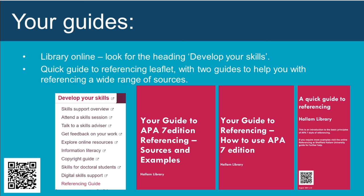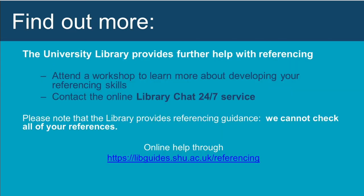'Your Guide to APA 7 Edition Referencing and How to Use APA' covers the main principles of referencing and citing. If you have questions about secondary referencing or citing multiple authors, take a look at this guide. 'The Guide to Referencing Sources and Examples' is a comprehensive guide providing examples of citations and references for many academic, online, and audio-visual sources. The QR code will direct you to the online referencing guide where you can locate these resources. The library is happy to provide advice on referencing, but cannot check every single one of your references — check them against the guidance provided.